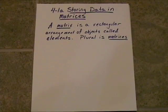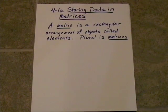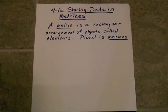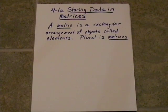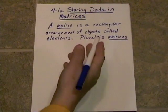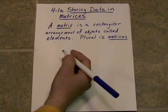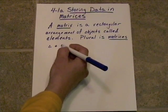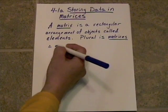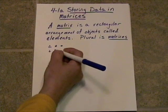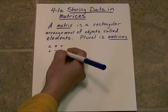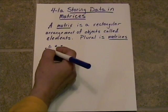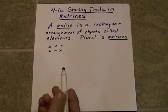A matrix is a rectangular arrangement of objects called elements. The plural of the word matrix is matrices. So what does this say? It's a rectangular arrangement of objects. I'll put a triangle, put a star, put a little dot, a plus sign, a minus sign, and an X. Here's a rectangular arrangement of objects.